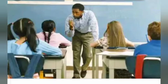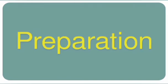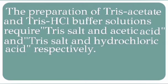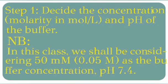Now let's see how to prepare Tris-acetate buffer and Tris-HCl buffer. The preparation requires Tris salt and acetic acid, and Tris salt and hydrochloric acid respectively. Step 1: Decide the concentration, i.e. molarity in mol per litre, and pH of the buffer. In this class we shall be considering 0.05 molar as the buffer concentration at pH 7.4.